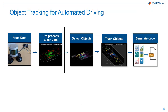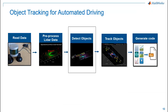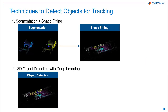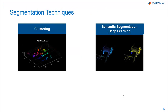Now that we have preprocessed our point cloud data, as a next step we will move on to object detection. There are two ways to detect objects and create bounding boxes for tracking. The first method is segmenting the point cloud and then fitting oriented bounding boxes around each object. In the second method, we will use object detection networks like PointPillars which can detect objects and create bounding boxes around them. There are two techniques to segment the point cloud: using clustering algorithms, and semantic segmentation using deep neural networks.